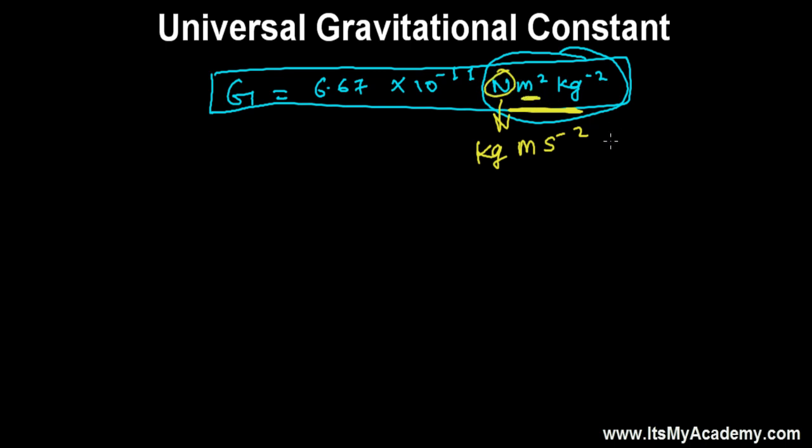And now meter square - we have another meter square. And again, kg inverse 2. We have kg inverse 2. So finally, what are we getting? We're getting kg inverse 1, meter cube, and second minus 2.